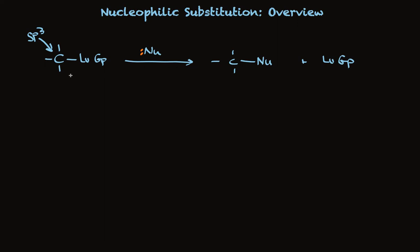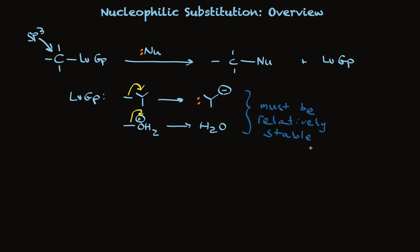But for now, let me just say that the leaving group will either be something that becomes negatively charged, as a pair of electrons goes with the leaving group. Here they are. Or be something that's positively charged. I'm going to be very specific here, OH2+. So when those electrons in the sigma bond are broken to go with the leaving group, a neutral molecule is made. In any case, these things must be reasonably stable.